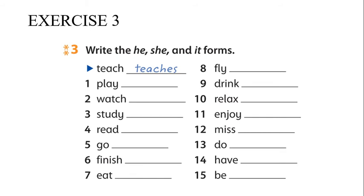Exercise three: add S or ES. For example, 'play' — before Y we have a vowel, so we just add S: 'plays'. For 'watch' — it ends in CH, so we add ES: 'watches'. For the other words, try to do it by yourself.